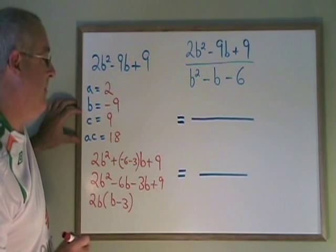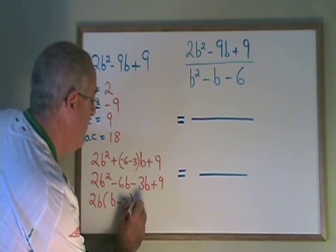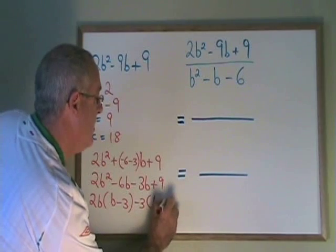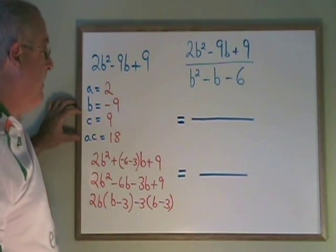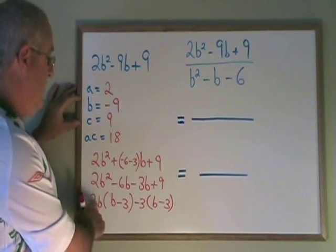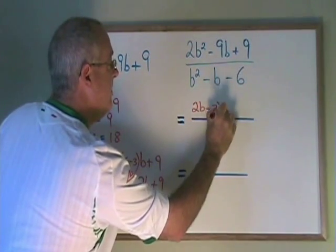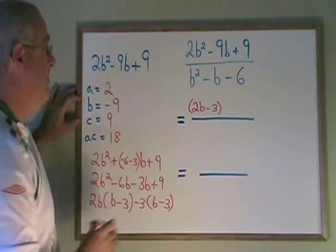The common factor of the final two terms is minus 3, and that factored out gives me b minus 3. The final factoring of the complex trinomial is 2b minus 3 times b minus 3.